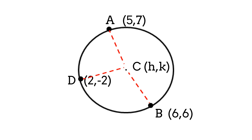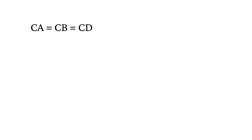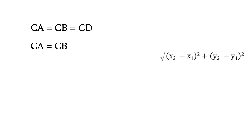Since CA, CB, and CD are the radii of the circle, we can say that CA equals CB equals CD. Since CA equals CB, by using the distance formula, the equation can be expanded.